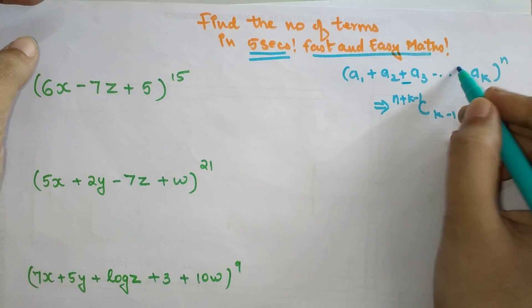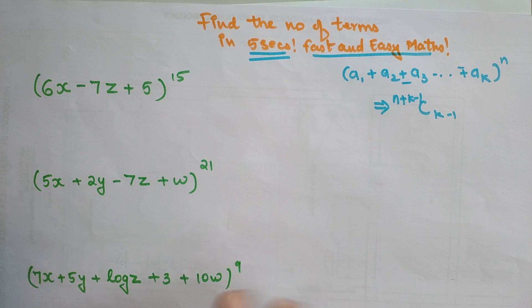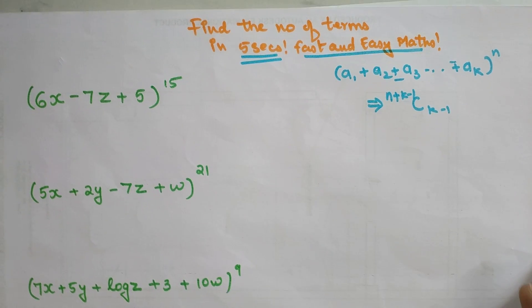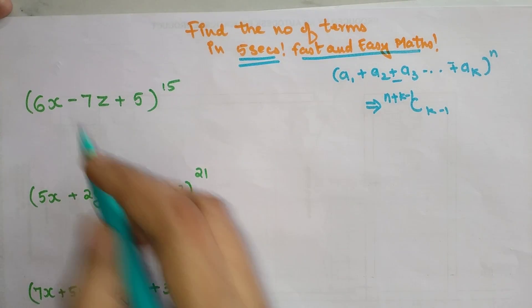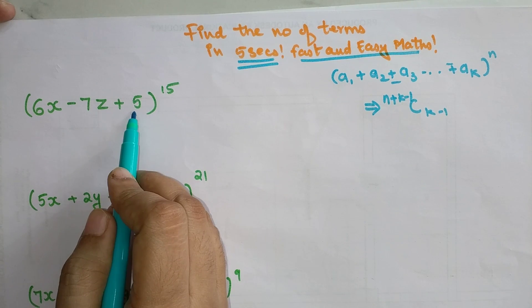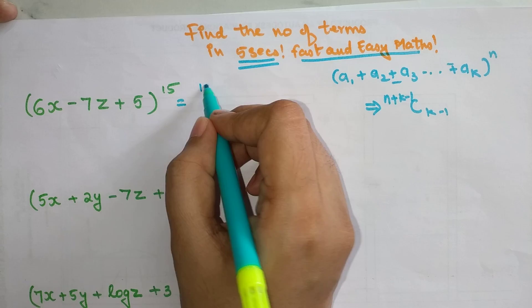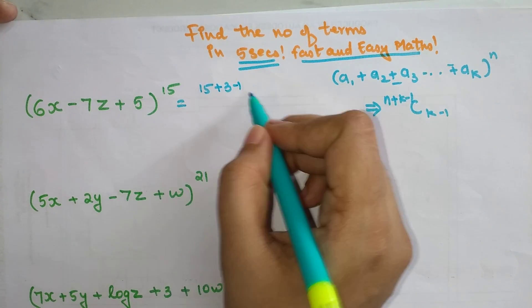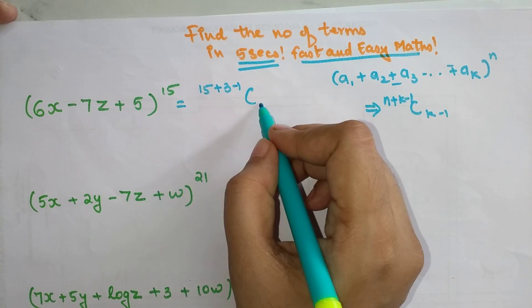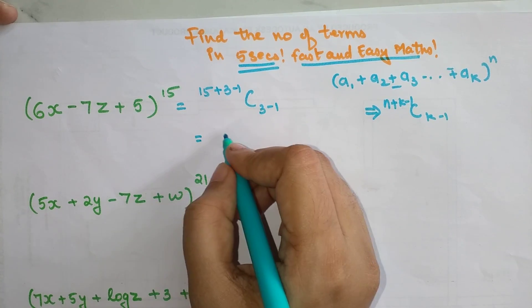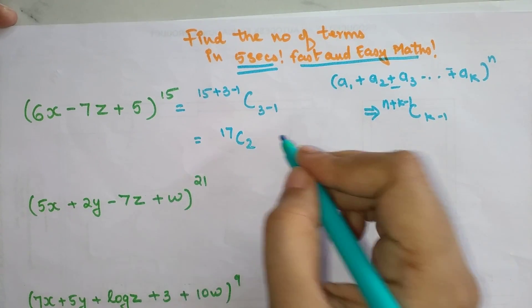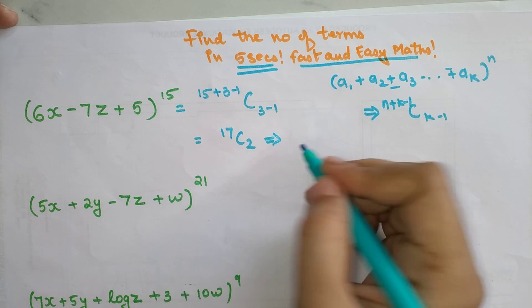Now over here, how many terms do we have? One, two, and three. So my final answer is (15+3-1) and this is (3-1), so this is coming out to be 17C2.